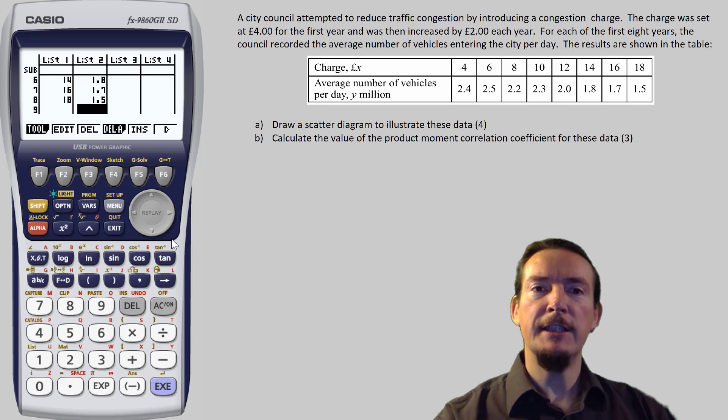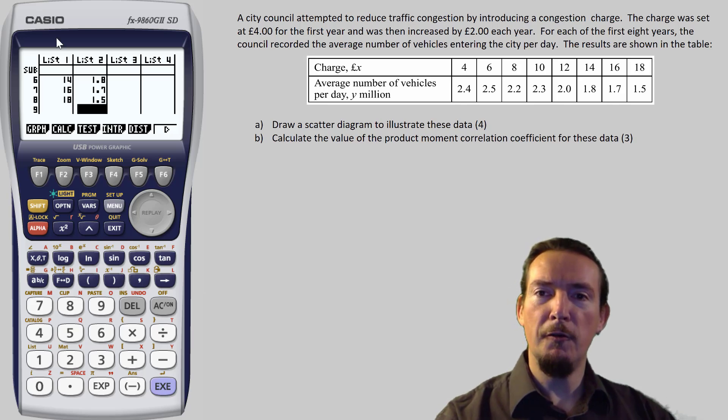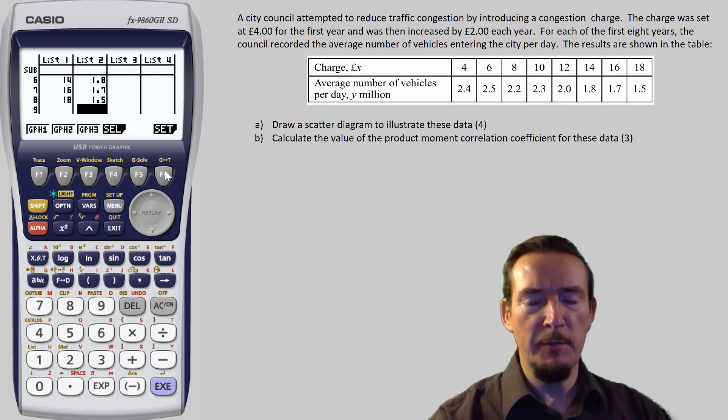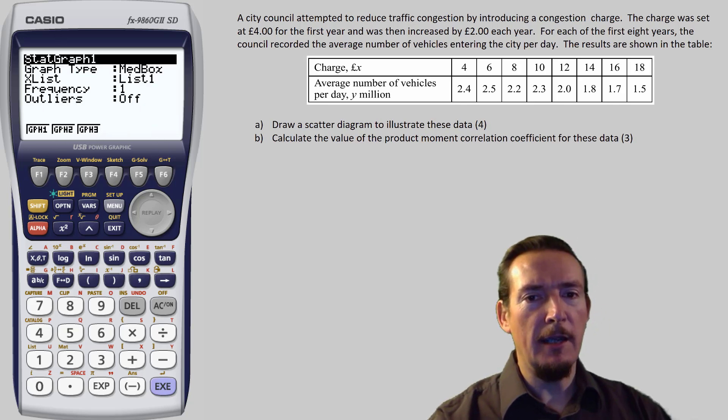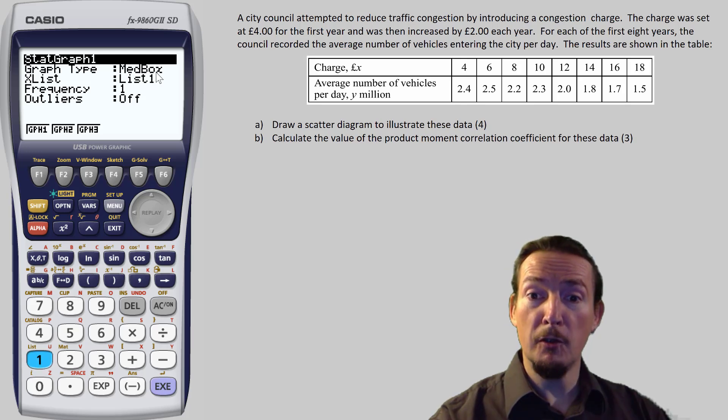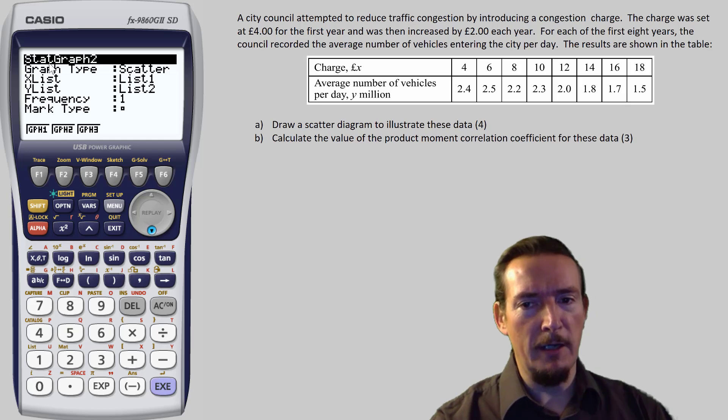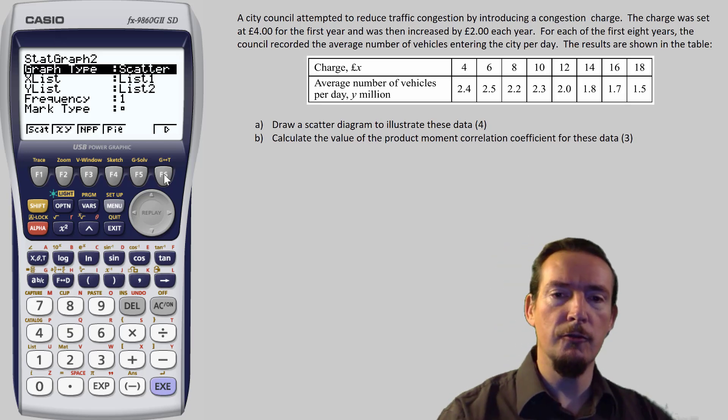Right, so F6 brings us back to the original menu of functions, and we want to tap F1 to graph the data. The calculator lets you store up to three presets for graphs, and you can press the set button to define what you want these to be. At the moment, I have graph 1 set up for box plots. I've got graph 2 set to draw a scatter graph, and graph 3 to draw a pie chart, but you can set these to whatever you want from the 20 or so available graph types that the calculator can draw.